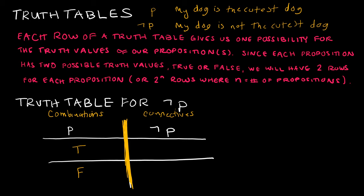Let's look at our proposition P — say P represents 'my dog is the cutest dog,' and not P represents 'my dog is not the cutest dog.' If P is true — my dog is the cutest dog is a true statement — then not P must be false, because my dog can't be the cutest dog and not the cutest dog at the same time. If P is false — my dog is the cutest dog is incorrect — then not P would have to be true. That's how a truth table works: left side has all combinations, right side has whatever connectives we use.